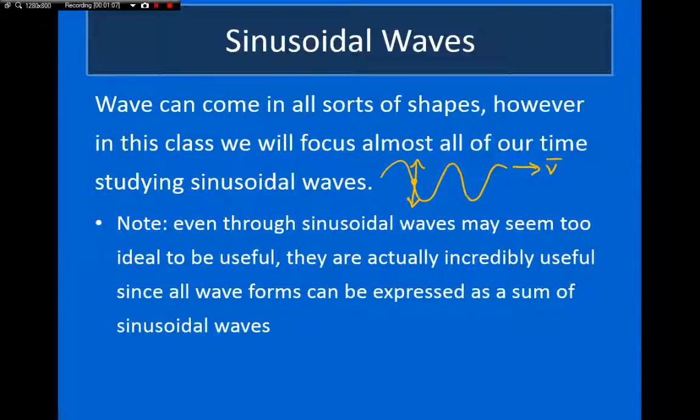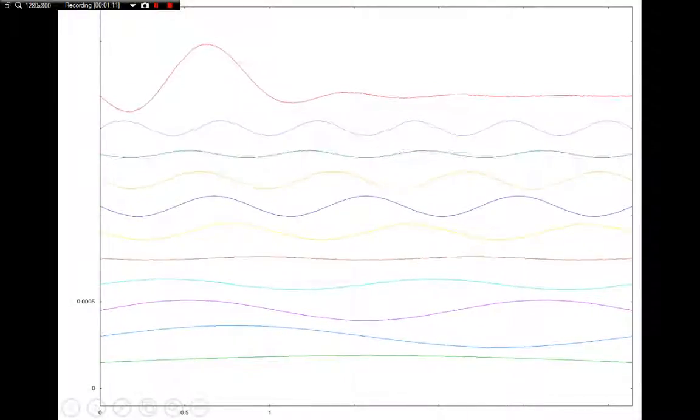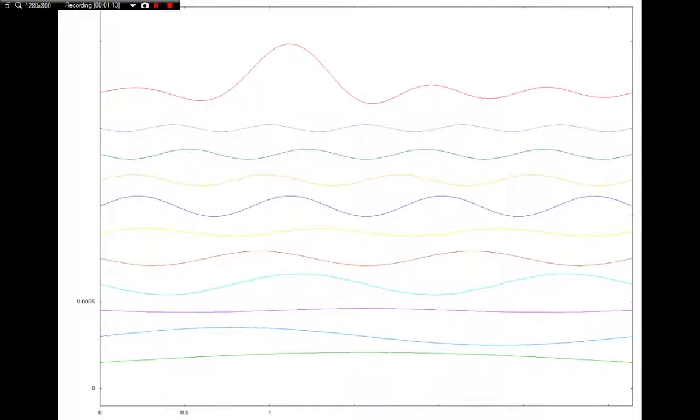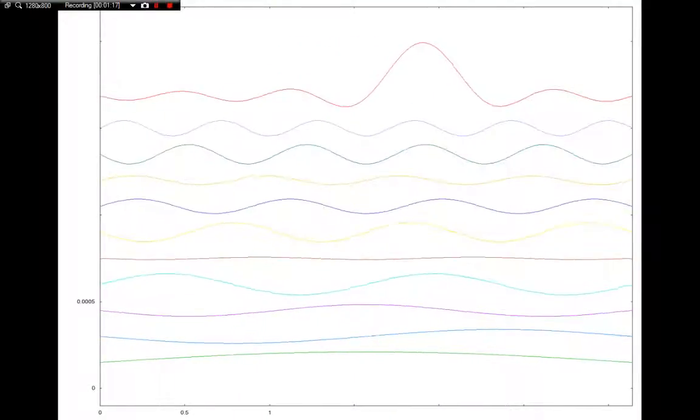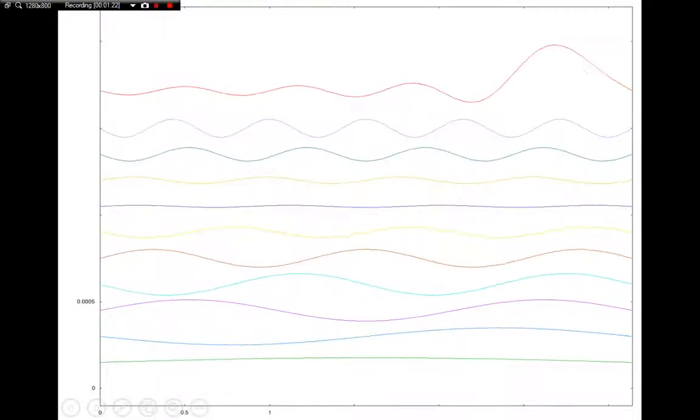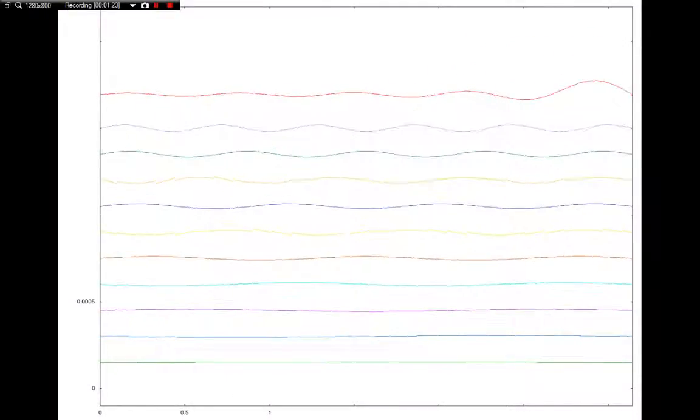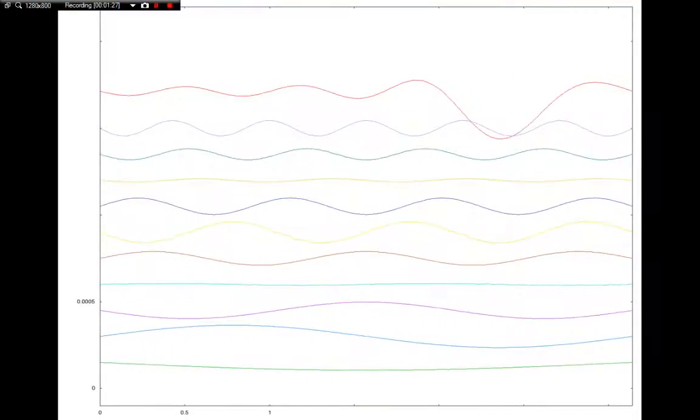So, to illustrate that point, in this next slide, I have at the top a pulse that's traveling to the right. And underneath it, I have ten sinusoidal waves. They're actually standing waves. And what we can see is by adding up these ten waves at the bottom, I can create this wave at the top. So, I can create this pulse-like shape by just adding up ten sine and cosine functions.